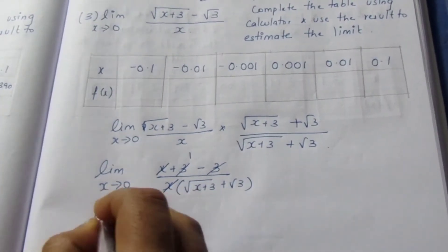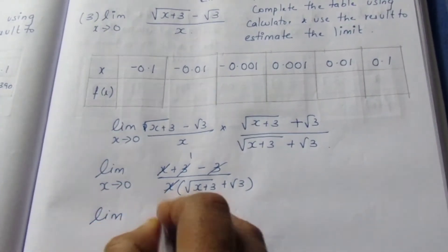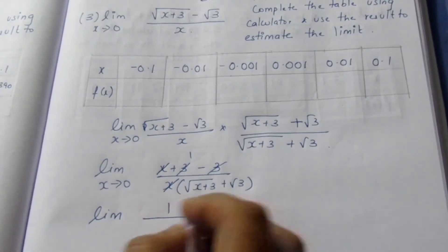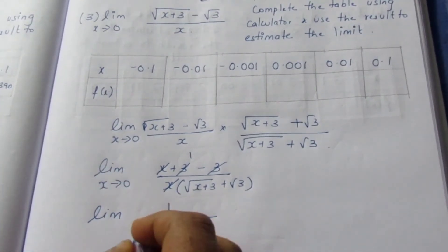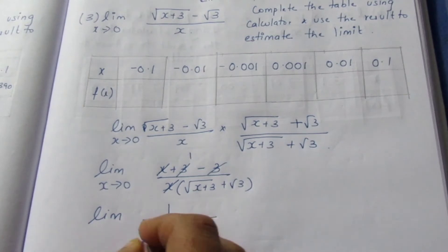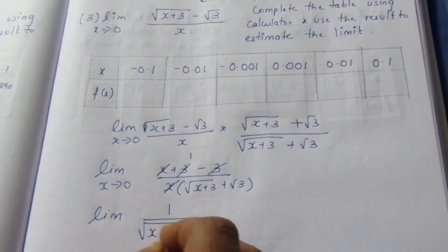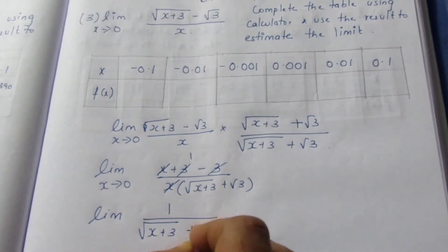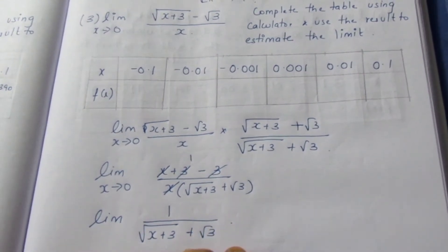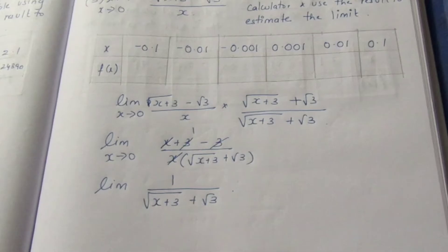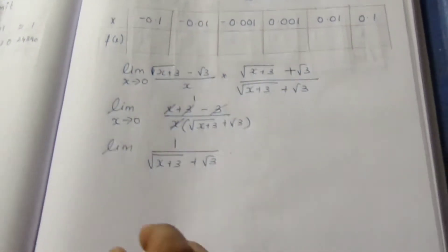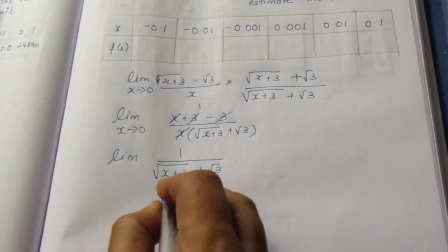After canceling x from numerator and denominator, we get the limit of 1 divided by (root of (x plus 3) plus root 3). Now we will substitute the x values from the table.